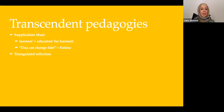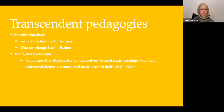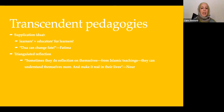Another transcendent pedagogy was triangulated reflection. Noor talked about young people: sometimes they do reflection on themselves from Islamic teachings — they can understand themselves more and make it real in their lives. She's referring to the fact that when we do reflection, sometimes we simply reflect, but other times we triangulate our reflection with either Islamic teachings or even what Allah might be thinking of us. The ability to do this is really a metacognitive ability — it allows us to look at ourselves in the most critical light and, in a way, the best light. If you try to look at yourself in terms of what Allah thinks of you, the practice of doing that makes us understand things about ourselves that we might not have seen otherwise.